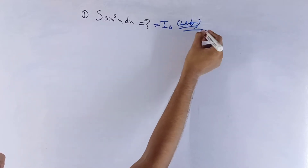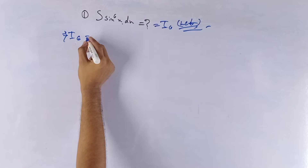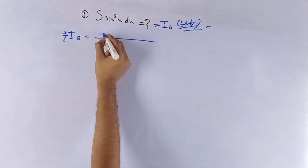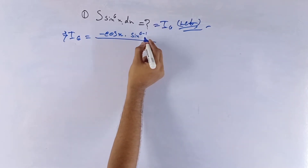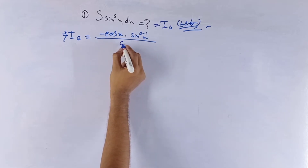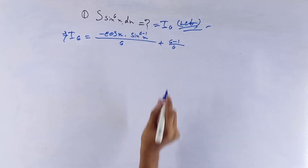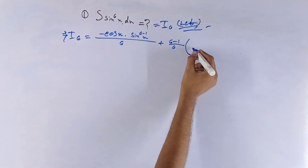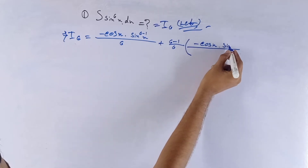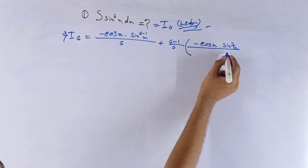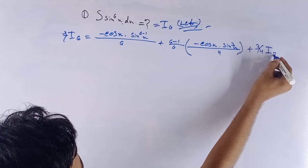I of 6 equals to the integration of sine to the power 6x dx. Using the reduction formula: I of 6 equals minus cos x times sine to the power 5x by 6, plus 6 minus 1 by 6, minus cos x times sine to the power 3x by 4, plus 3 by 4 of I of 2.